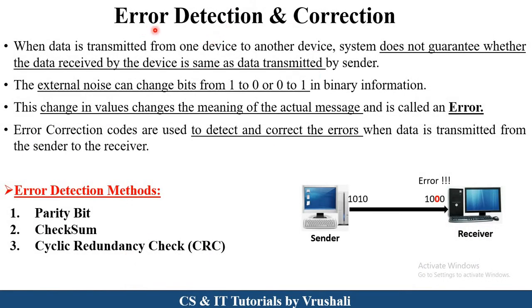The first point is: what exactly is error detection and correction? In a network, the sender sends particular information to the receiver in binary format like 0101. Sometimes the receiver doesn't get the actual message sent by the sender. Suppose the sender sends 1010 but the receiver gets 1000 — this change in bits is called an error. Finding out this error is called error detection, and solving those errors is called error correction.